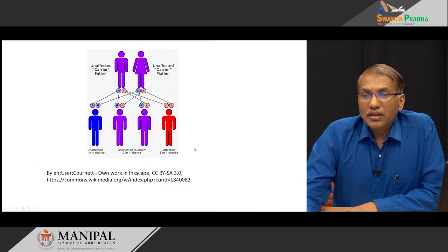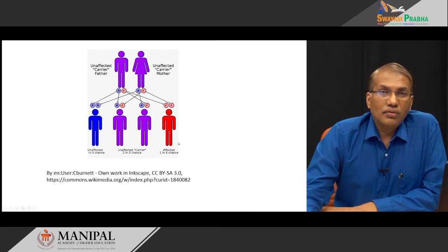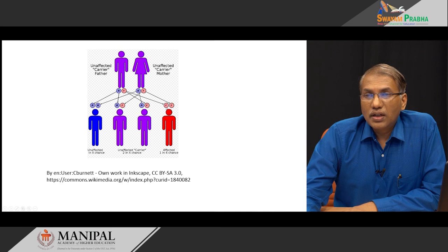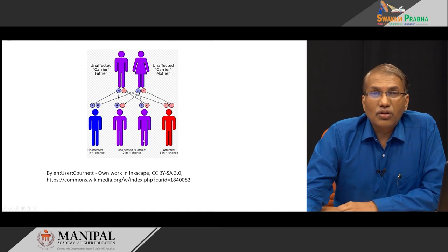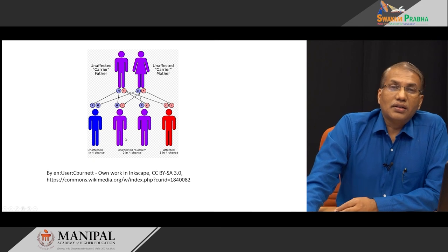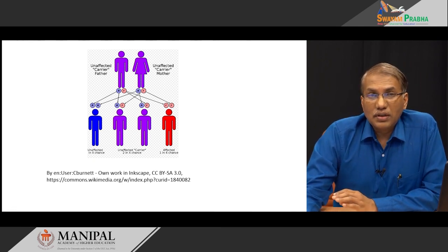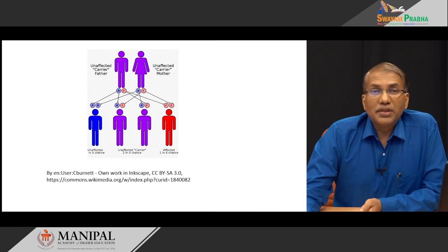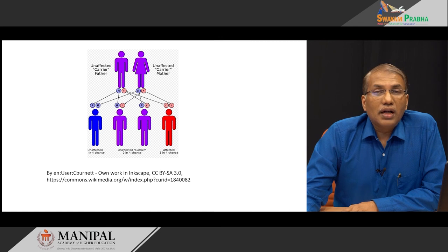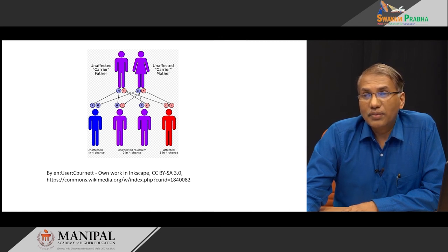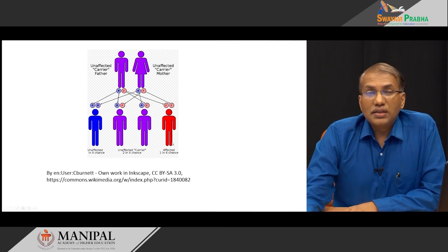Sickle cell disease is an autosomal recessive disorder, where the chances of being affected is only one in four children if both parents are carriers. By permutation and combination, one child may be totally normal, two may be carriers. In the carrier state, the normal gene is still able to compensate, so some RBCs will remain normal without sickle cell hemoglobin and the patient will not have any problem. Whereas if both genes inherited are abnormal, the person will have sickle cell anemia.